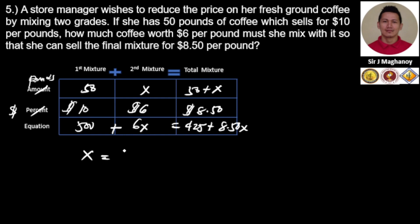So we have 30 pounds of $6 coffee. Let's check our answer if it is correct.